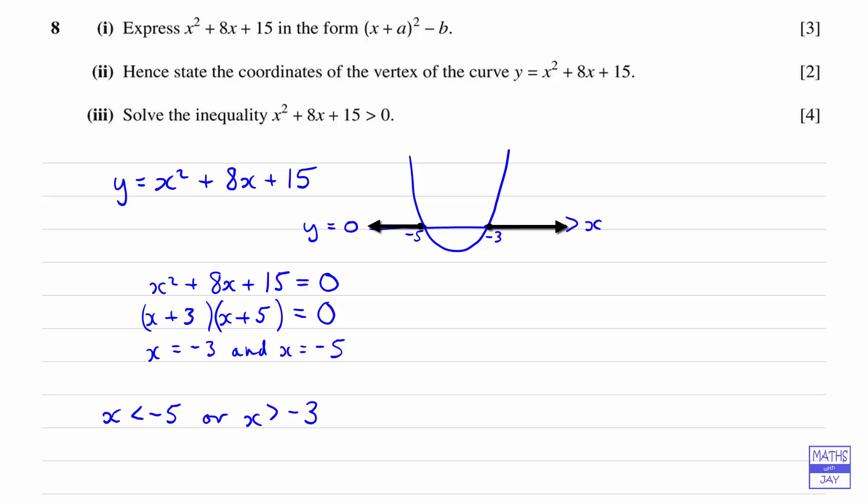You could also try substituting in x is equal to, say, negative 8 to check that a value less than negative 5 does give you a positive value. And you could try substituting in, well, an easy value would be zero, wouldn't it? An easier value that is greater than negative 3. So you can check whatever values you want to satisfy yourselves that the answer is that x is less than negative 5 or x is greater than negative 3.